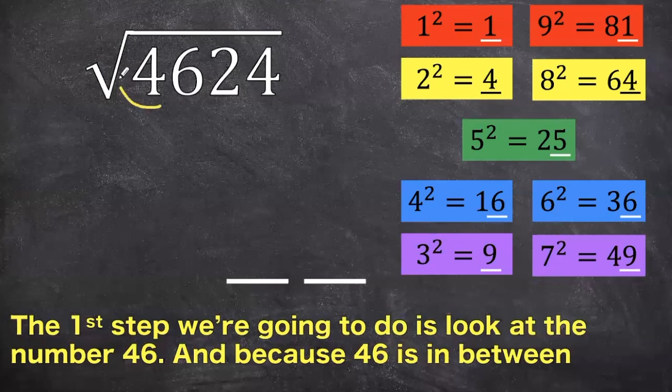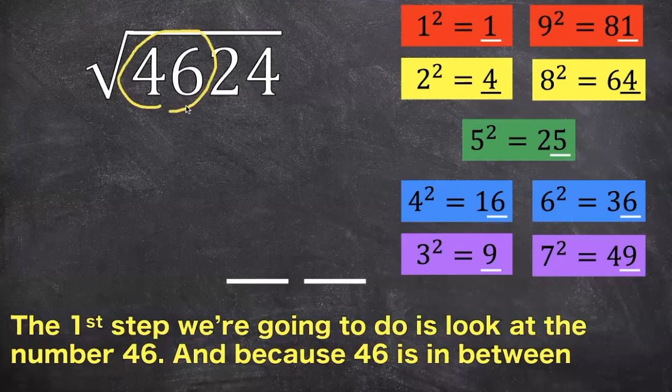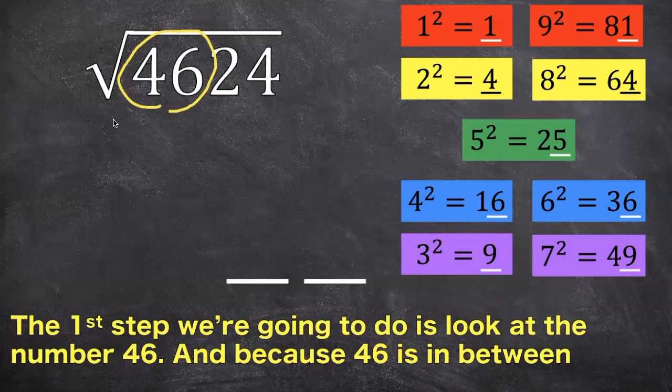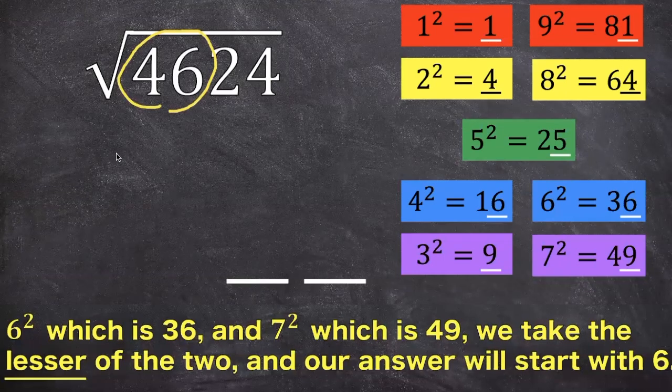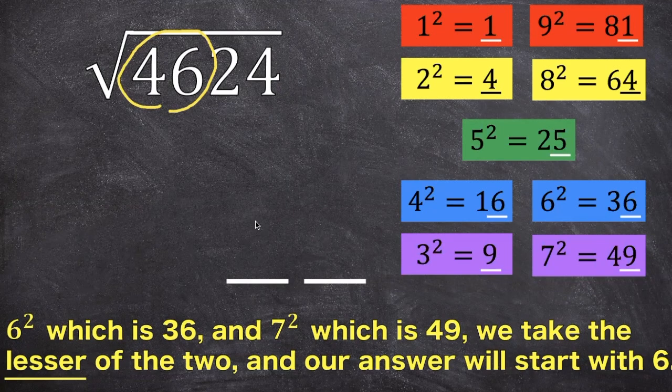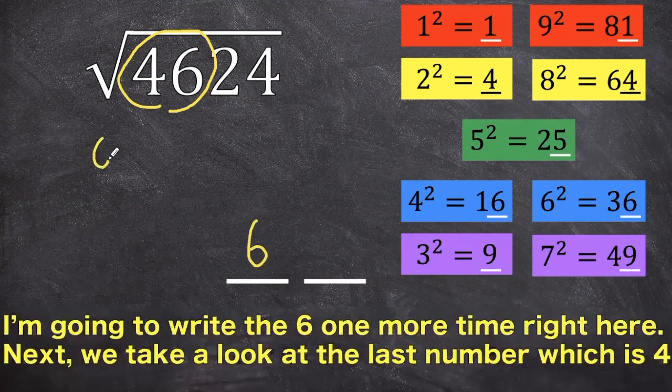The first step we're going to do is look at the number 46, and because 46 is in between 6 squared, which is 36, and 7 squared, which is 49, we take the lesser of the 2, and our answer is going to start off with the 6.